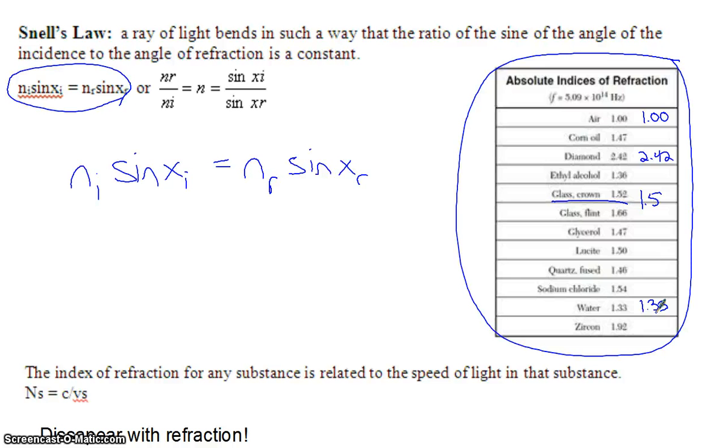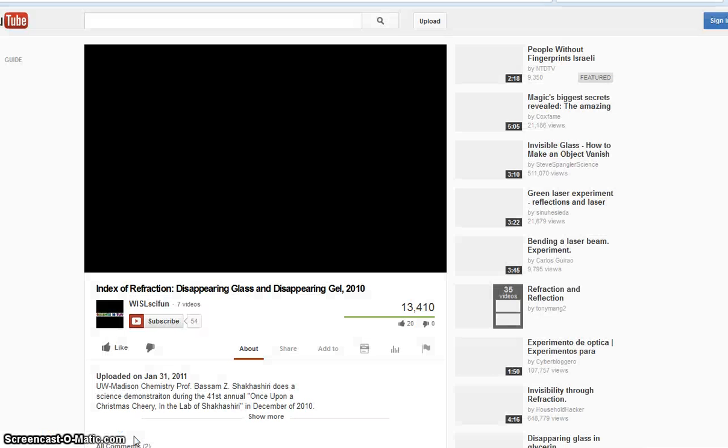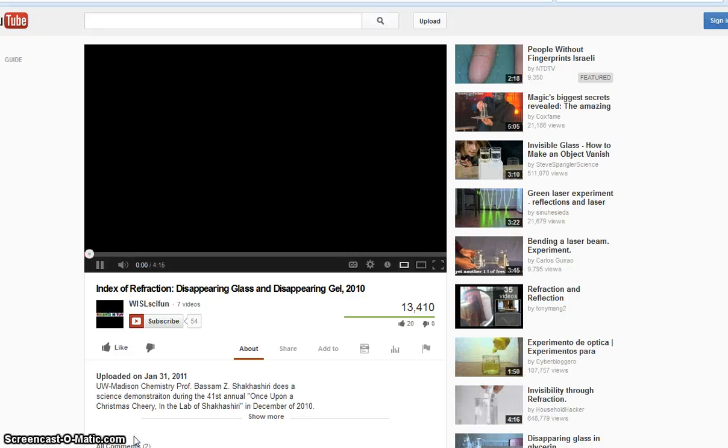All right, the index of refraction is based on the speed of light in that material. So the N is the index of refraction, C is the speed of light, and VS is the velocity in that substance. So the slower light goes in that material, the larger the index of refraction. So light is reasonably slow in diamond.